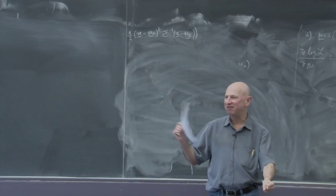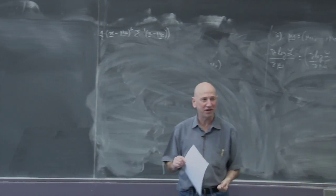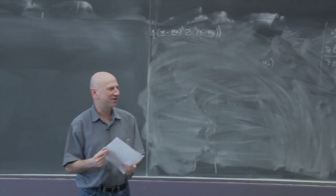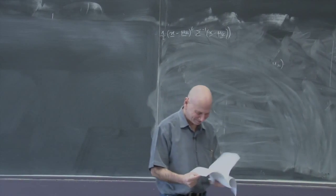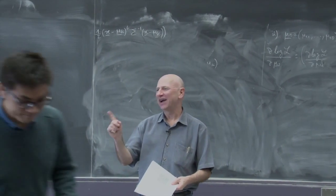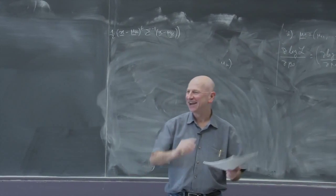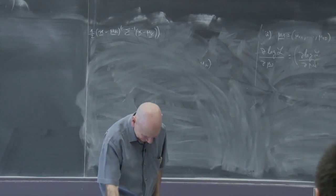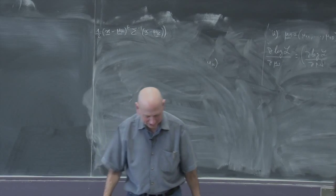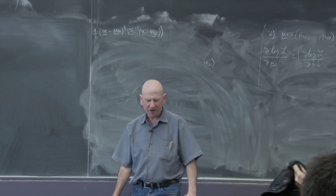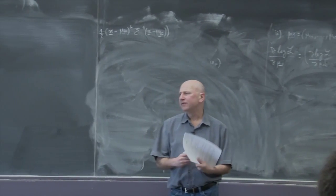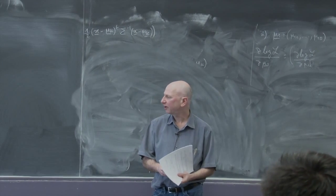If you want to have fun, get together one night — three people, one takes the part of the Bayesian, one takes the part of the frequentist, the other person's the moderator hiding the treasure. Put some money in — say $20 each — and see who's richer at the end of the night, the frequentist or the Bayesian. We're going to talk about nonparametric Bayes, which is pretty interesting — the constructions themselves are quite clever.